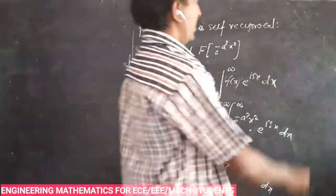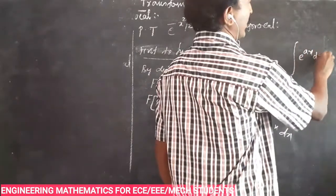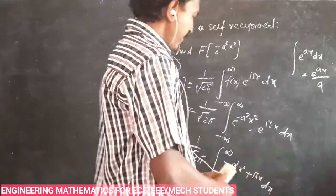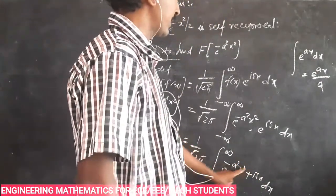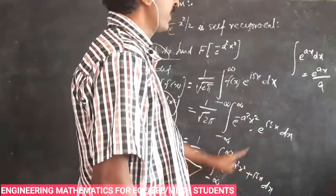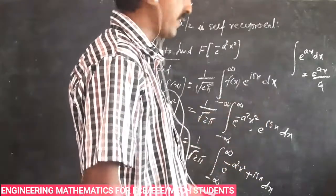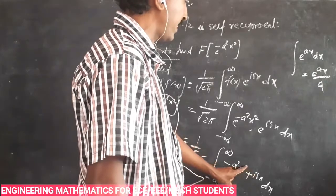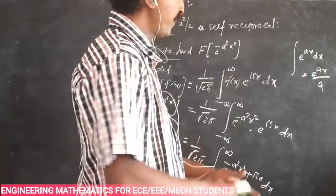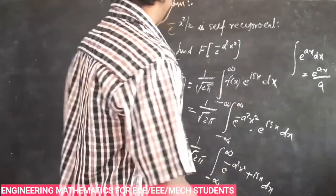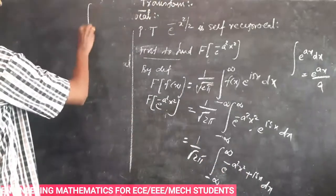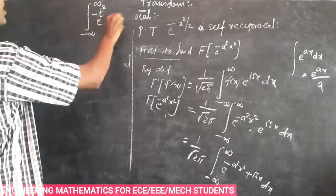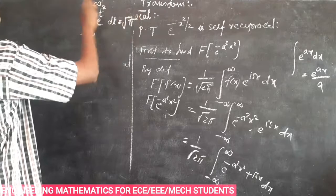The integral of e power a x dx equals e power a x by a. However, here e power minus a squared x squared is a second degree equation, so that formula does not apply. Instead, we use the formula: integral from minus infinity to plus infinity of e power minus t squared dt equals root pi. We will convert the exponent into square form.